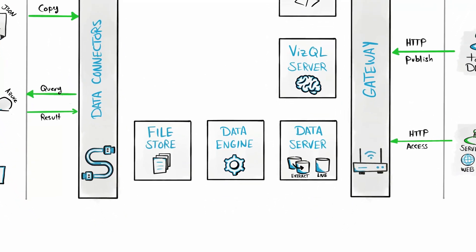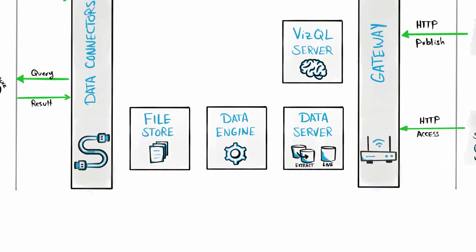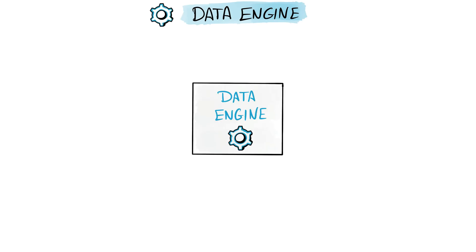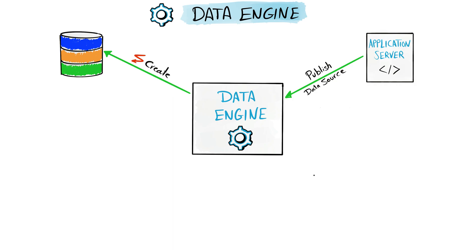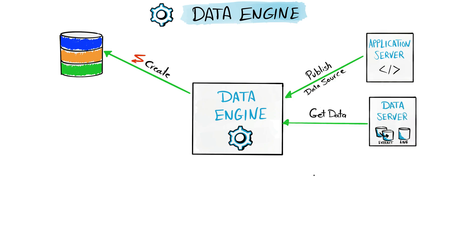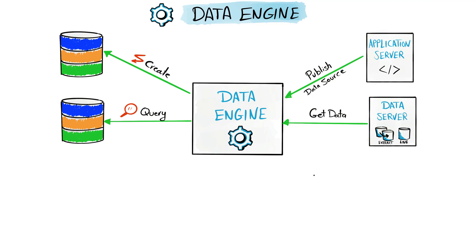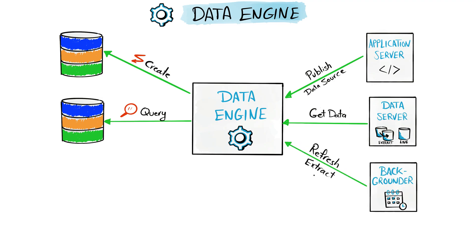The Data Engine handles data stored inside Tableau as an extract. Different components can send requests to it. For example, the Application Server can request it to publish a new extract, and the Data Engine executes a create operation to create a new extract and store data in it. The Data Engine can also receive a query request from the Data Server — it finds the correct extract, connects to the hard drive, pulls the needed extract, and sends the data back to the server.